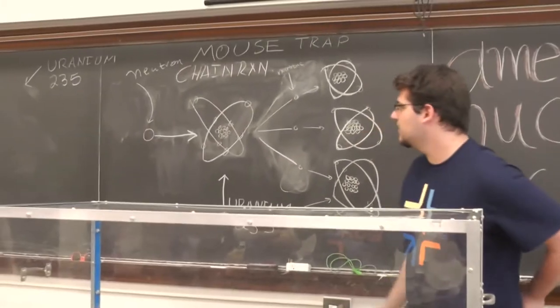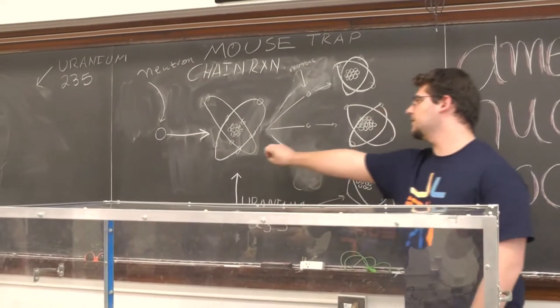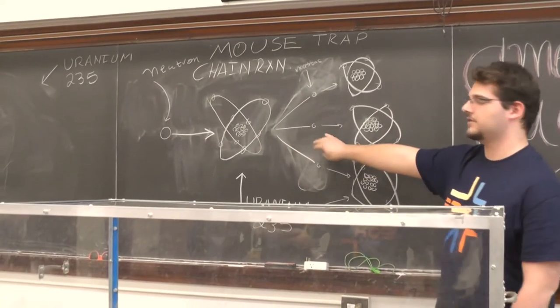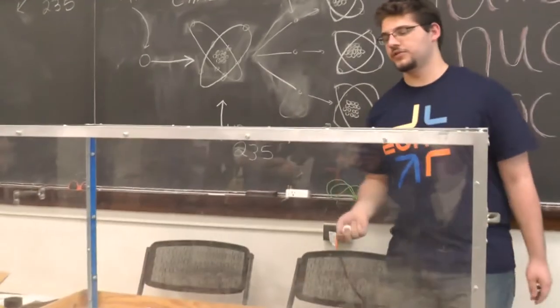So what happens is when we send in a neutron, it hits one of the unstable uranium atoms, which releases energy and other neutrons. Those other neutrons travel to other uranium atoms, which release more energy and more neutrons.